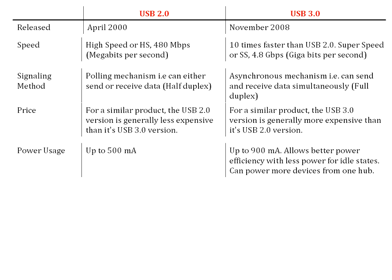For power usage, USB 2.0 provides up to 500 milliamperes while USB 3.0 provides up to 900 milliamperes. USB 3.0 also allows better power efficiency with less power for idle states and can power more devices from one hub.